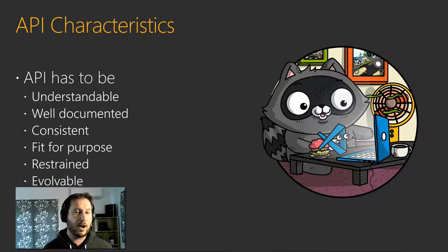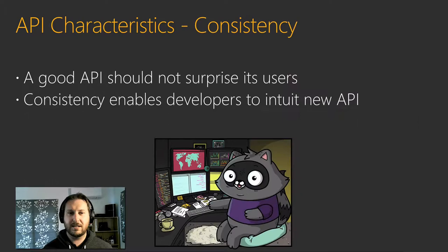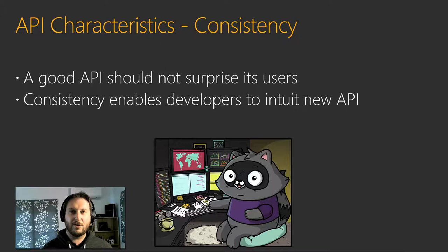Due to limited time, I'm not able to talk about all API characteristics. What I tend to cover in longer forms of this presentation is that an API should be understandable, well documented, consistent, fit for purpose, restrained, and evolvable. A good API should not surprise its users. If we have an API doing one thing in one place and something different in another place, our users will be confused. We want our users to be able to easily intuit new API from their experiences with your old API.